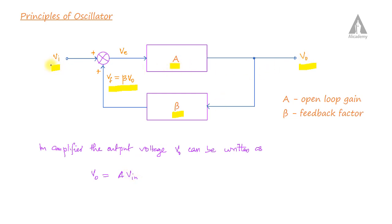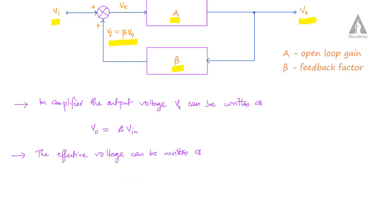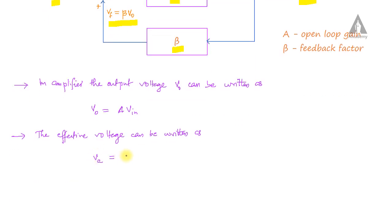So V0 can be written as V0 equals A times Vin, where A is the open-loop gain and Vin is the input voltage. The effective voltage Ve can be written as Ve equals Vi plus Vf. The plus symbol means we are using positive feedback — the feedback voltage is added to the input signal. This is equation number one and equation number two.